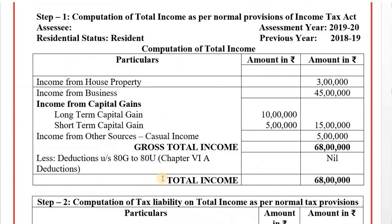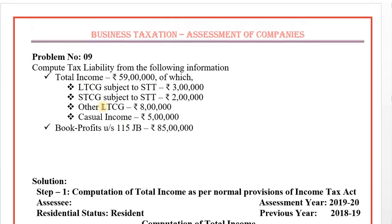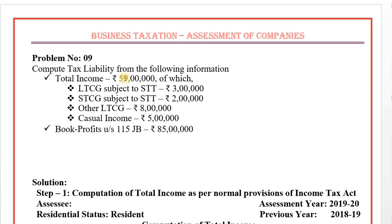This is problem number 8, which we have solved. Now we will see problem number 9. Compute tax liability from the following information. Total income includes long-term capital gain subject to STT (securities transaction tax): 3 lakhs — with 1 lakh exemption, 2 lakhs are taxable at 10%. Short-term capital gain subject to STT: 2 lakhs at 15% special tax. Other long-term capital gain: 8 lakhs at 20% rate of tax. Casual income: 5 lakhs at 30% rate of tax.